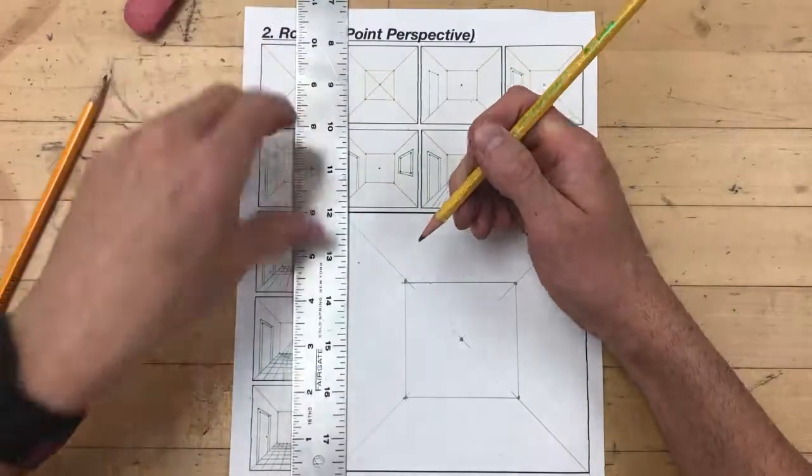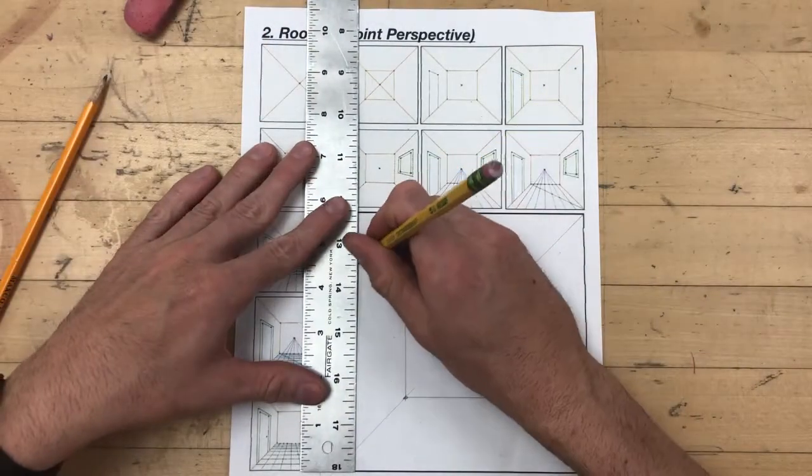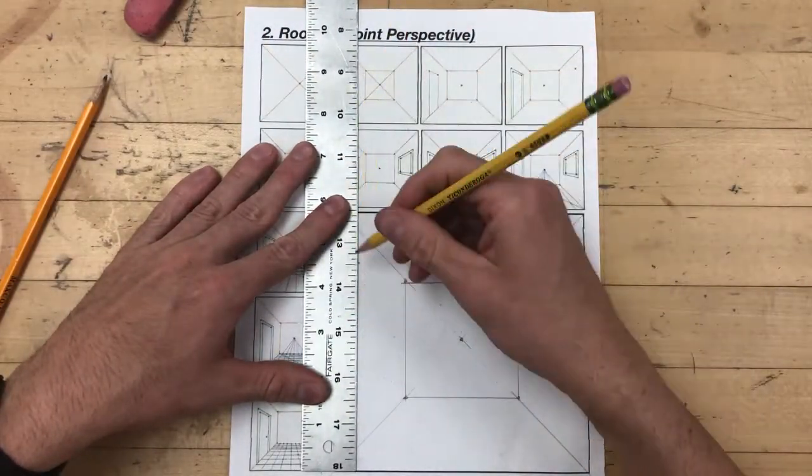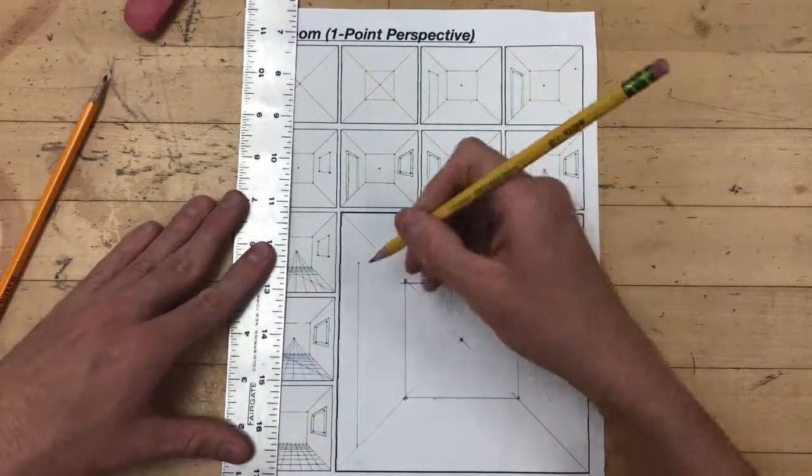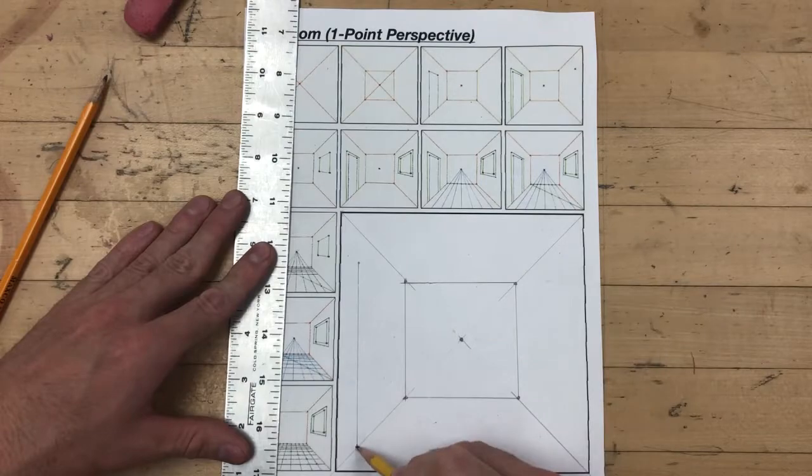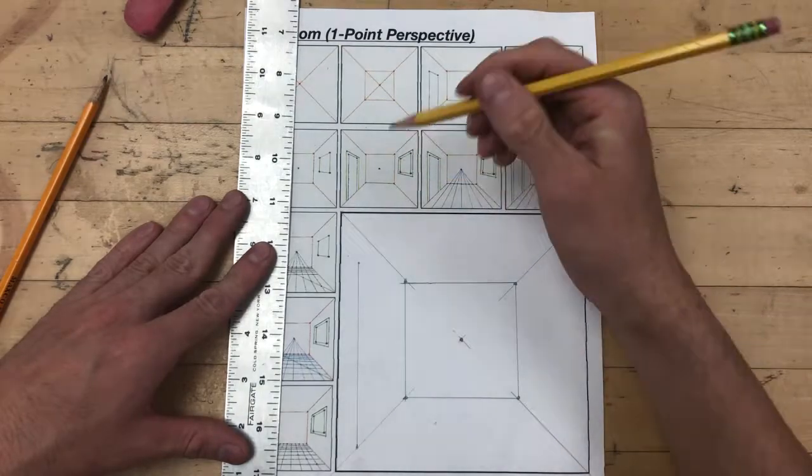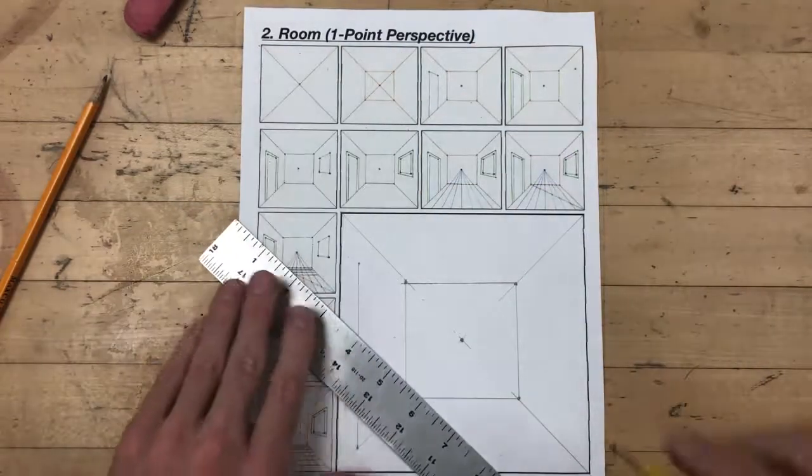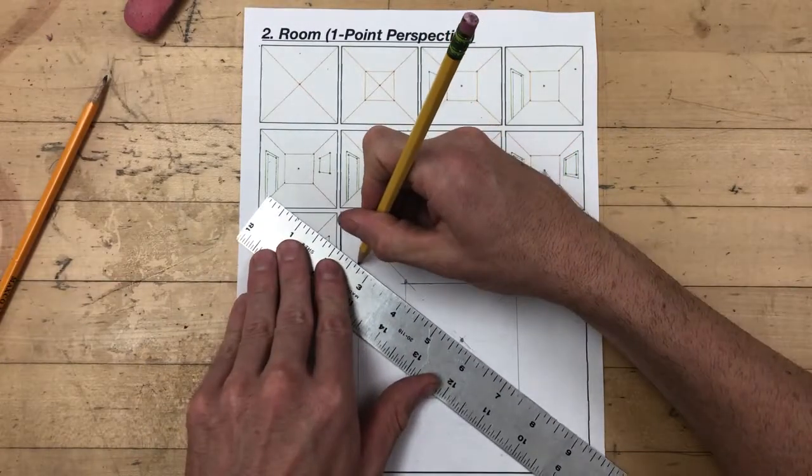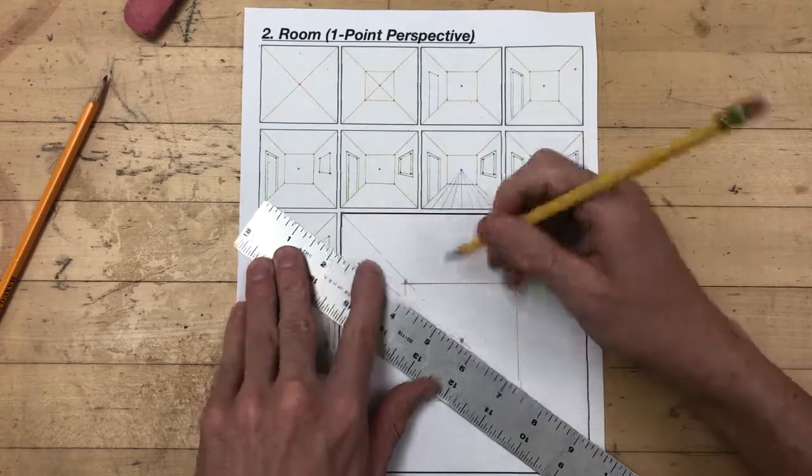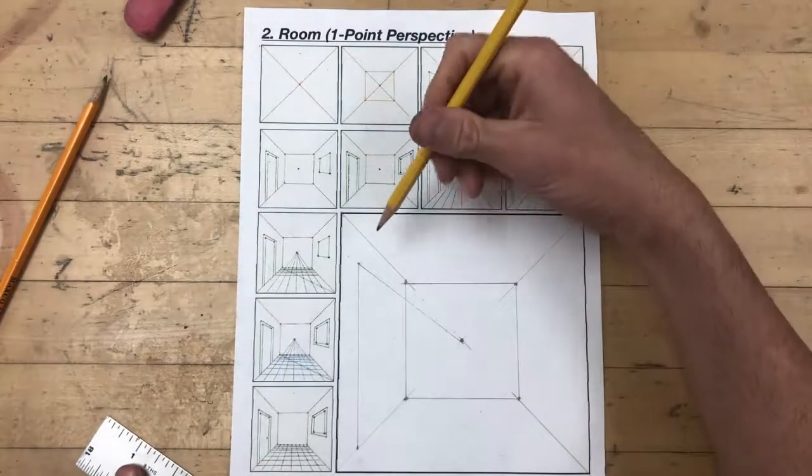Making certain my ruler again is perpendicular to the bottom of the drawing area, I'm going to draw downward until it intersects with the next orthogonal line. This gives me a dot, a line, and another dot. I'm going to lightly, using my ruler, connect that dot that I made at the top back to my vanishing point. I'm going to darken it just a little bit so you can see what I've done.